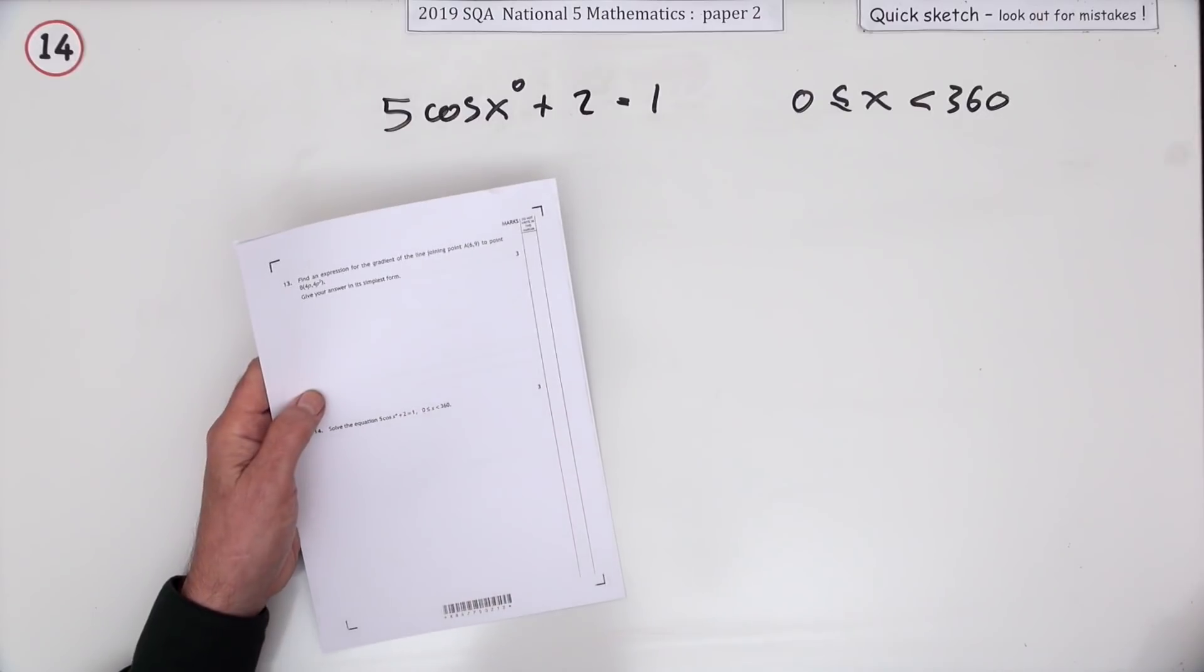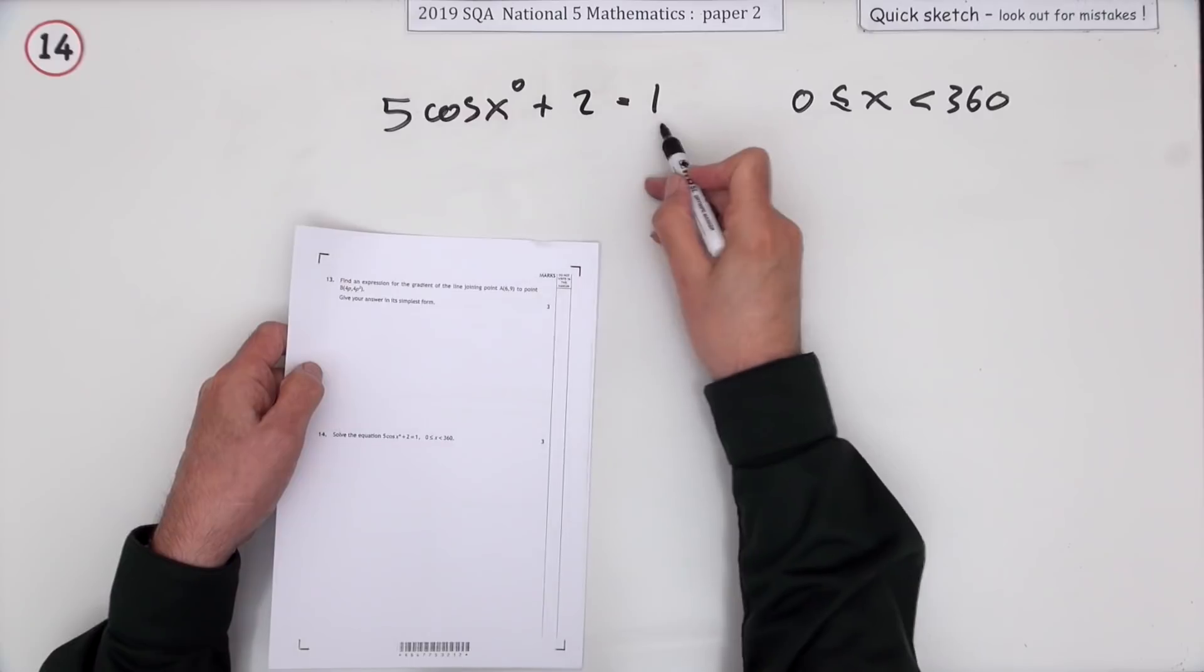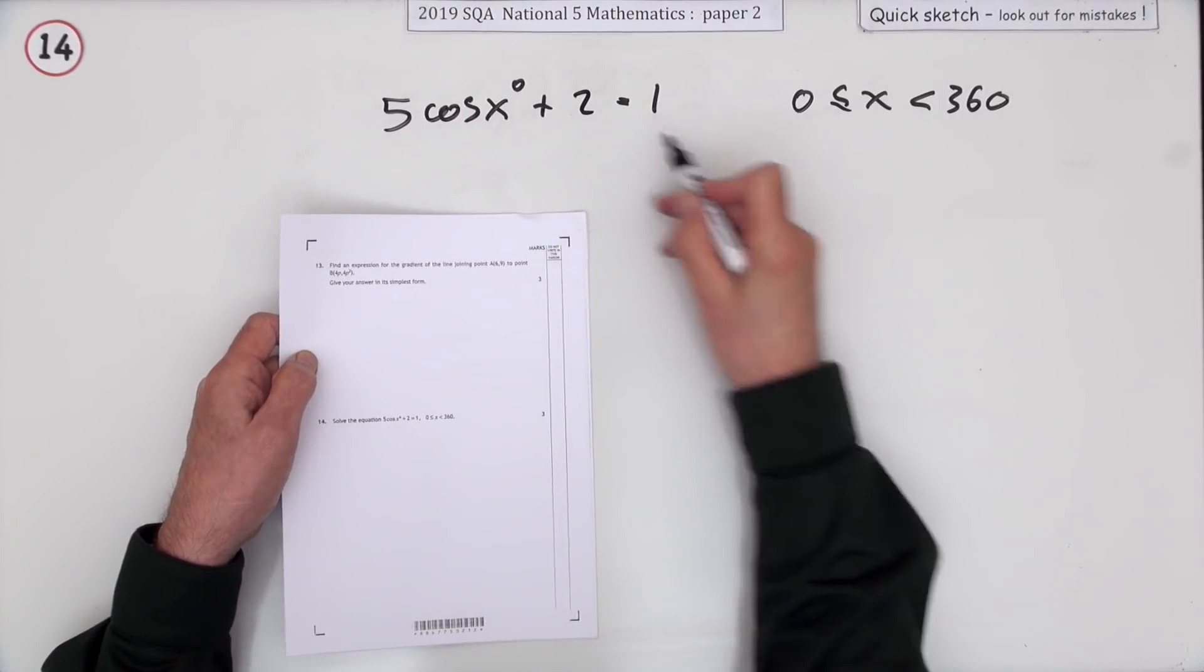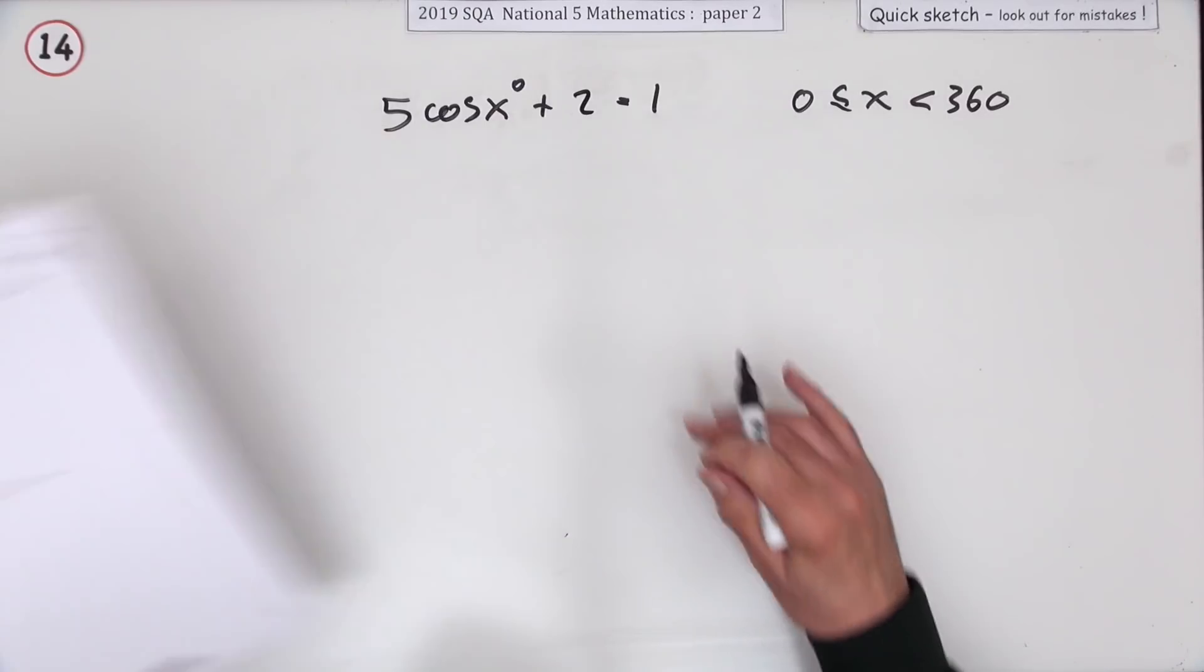Number 14 - a trig equation here for three marks. Solve this equation 5cos(x°) + 2 = 1 for angles between 0 and 360. There's going to be two answers here.